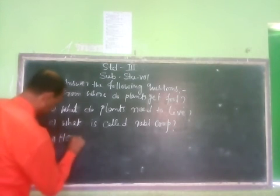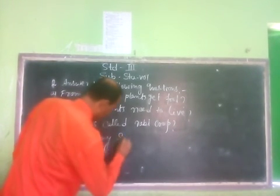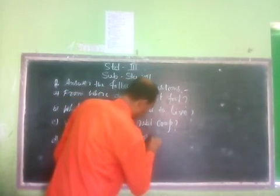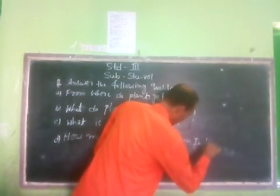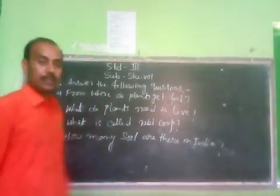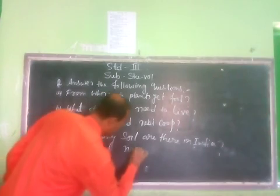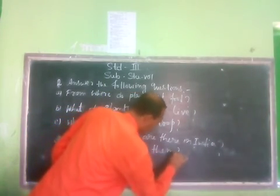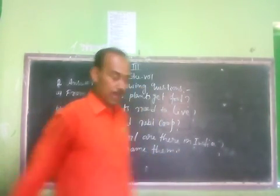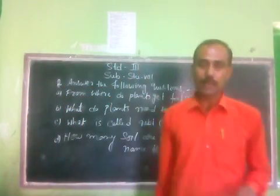How many types of soil are there in India? There are six types of soil in India. Name them: alluvial soil, red soil, black cotton soil, laterite soil, sandy soil, and rocky soil.